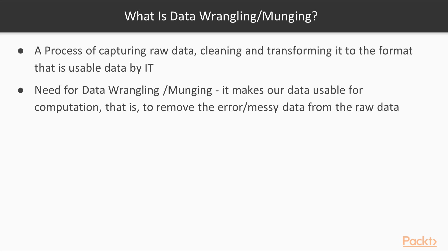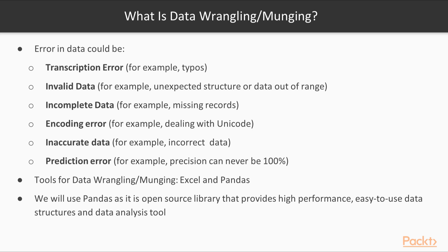Data wrangling and munging is related to raw or messy data. It is basically a process of capturing raw data, cleaning it, transforming it, and making it usable. We need data wrangling and munging so that IT can leverage the data. Common errors in data include transcription error, invalid data, incomplete data, encoding error, inaccurate data, and prediction error. Two tools are available: Excel and Pandas — here we opt for Pandas.